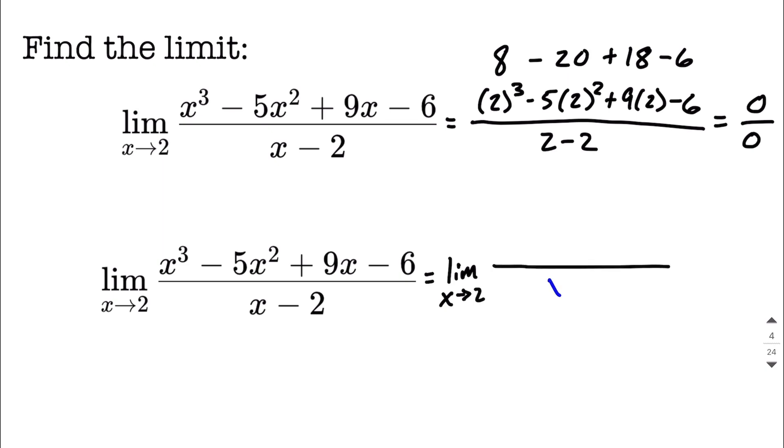that's telling us some valuable information about this limit. What it's telling us is x minus 2 is going to be a factor of the denominator. It's pretty obvious already, but it also tells us that x minus 2 is going to be a factor in our numerator. So our goal is going to be to find that other factor for our numerator.